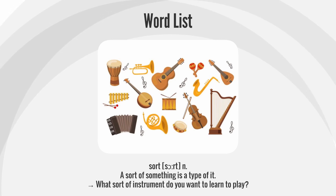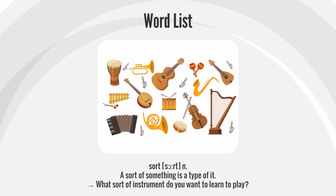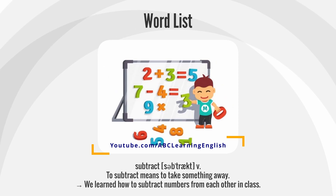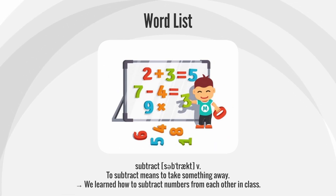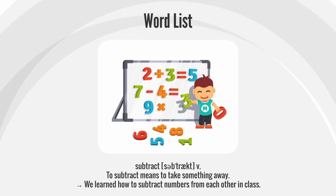Sort — a sort of something is a type of it. Example: What sort of instrument do you want to learn to play? Subtract — to subtract means to take something away. Example: We learned how to subtract numbers from each other in class.